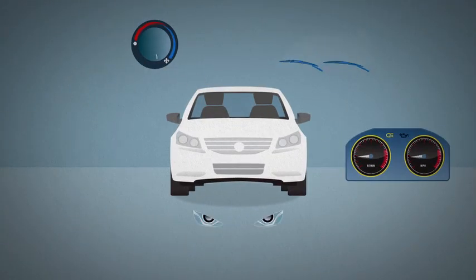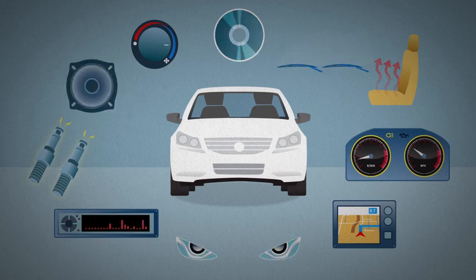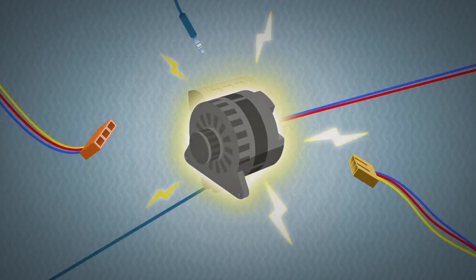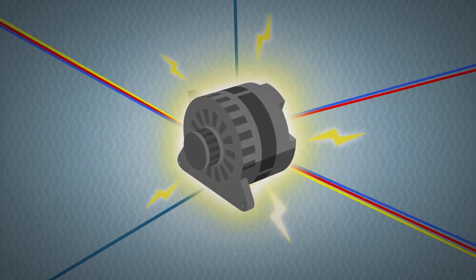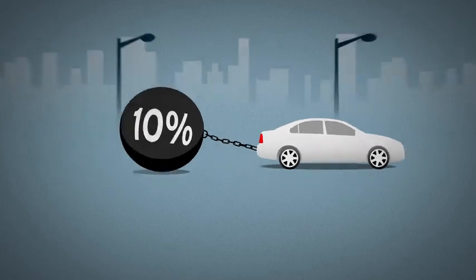Meanwhile, cars also use a lot of electricity to power everything from essentials to all the electronic gizmos that drivers demand today. They get this electricity from the alternator, which in most cars is constantly cranked by the engine, sapping up to 10% of your fuel and horsepower in everyday driving.